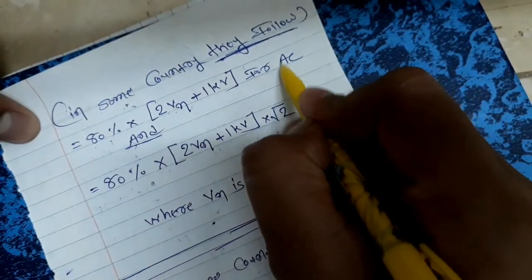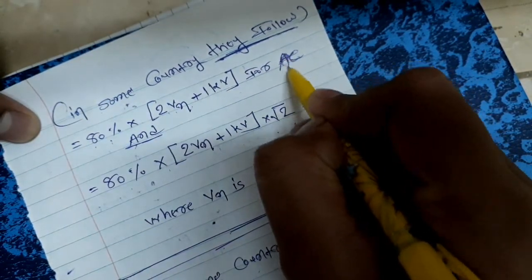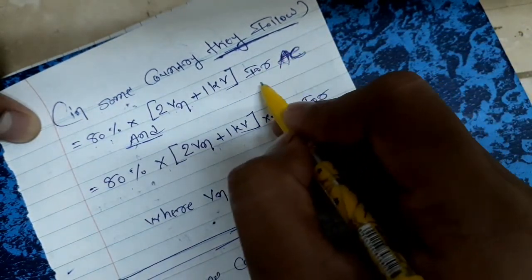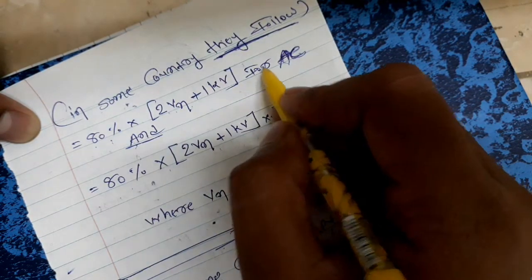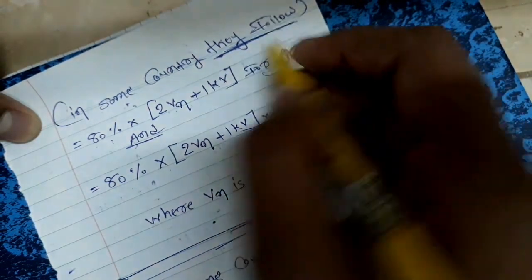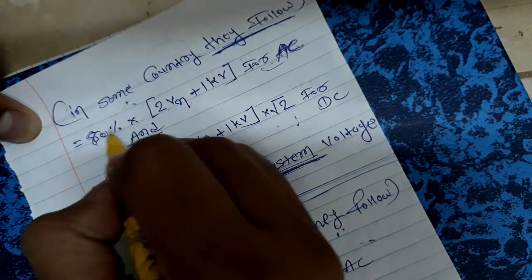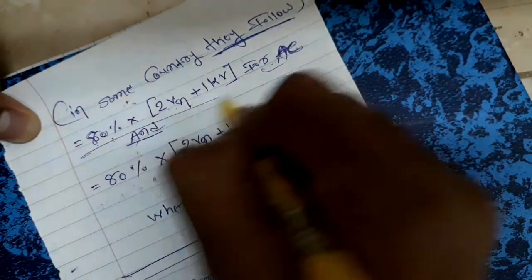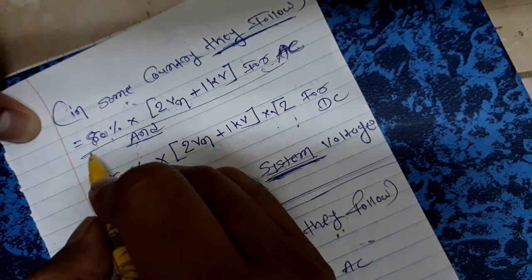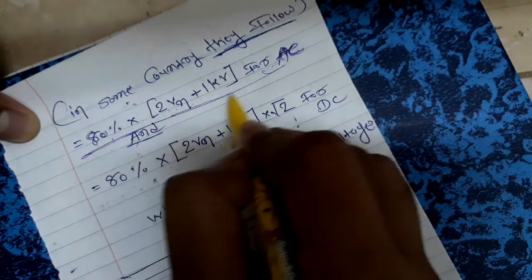When we check equipment like breakers in the power system, for the first time we will use 80% of this formula. For maintenance testing, we can use a different percentage.